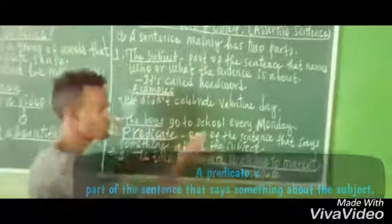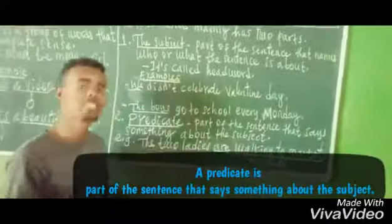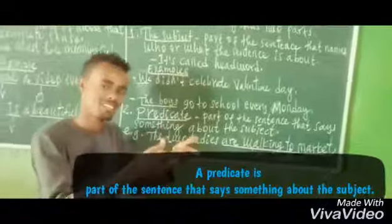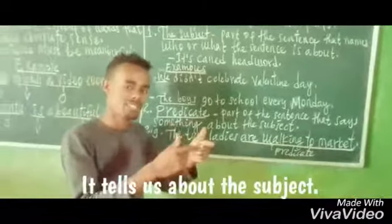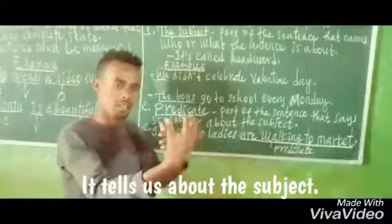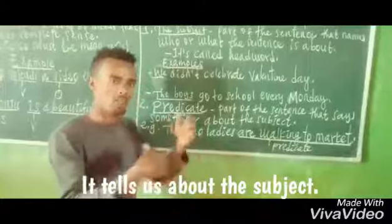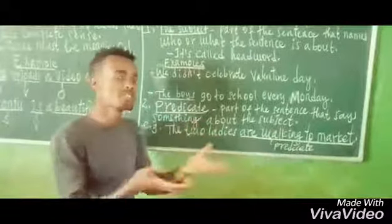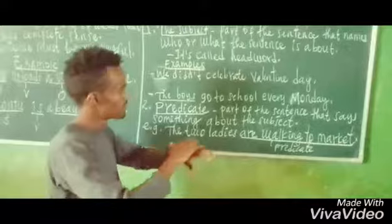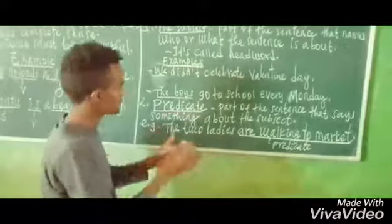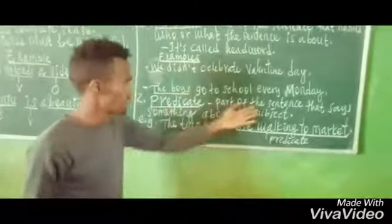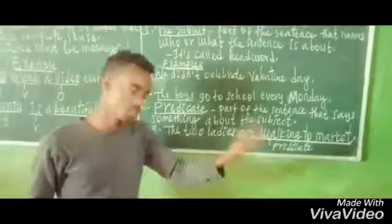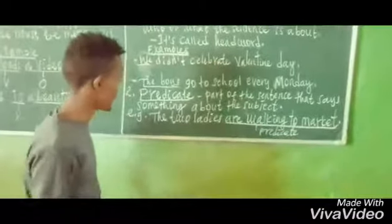The predicate is part of the sentence that says something about the subject. The words that are bound around the subject are called the predicate. So the predicate is the part of the sentence that says something about the subject.